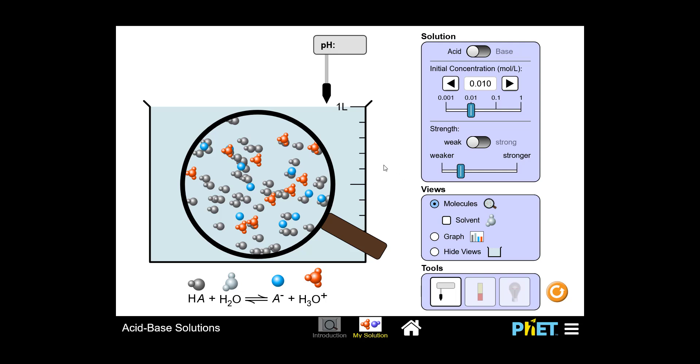The solution that we're currently observing is a weak acid. As you can see, in the beaker there are three different particle types present: gray HA molecules, blue A- ions, and red H3O+ ions. There are also H2O molecules present in solution, but they've been turned off for clarity.